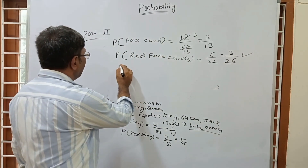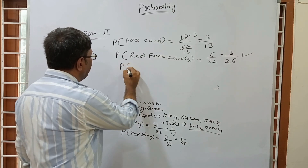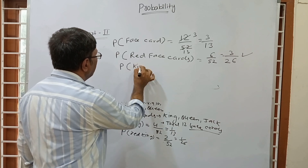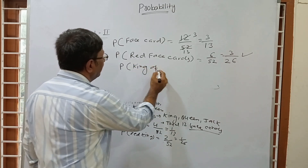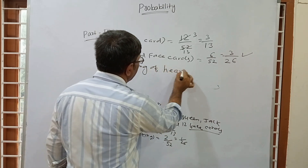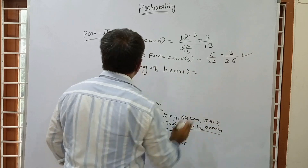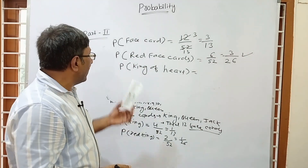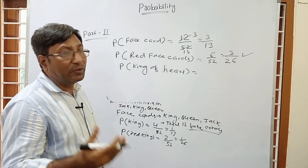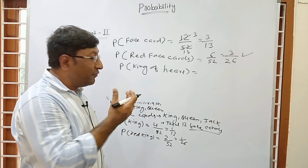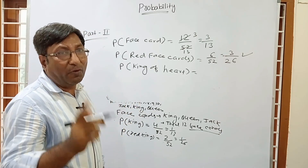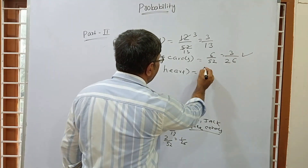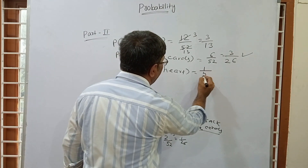If the question is: what is the probability of drawing the King of Hearts? Each suit has only one King, so there is only 1 King of Hearts. Therefore the probability = 1/52.